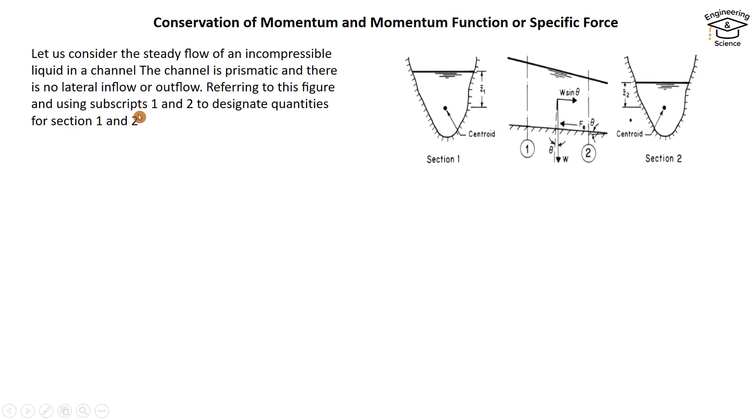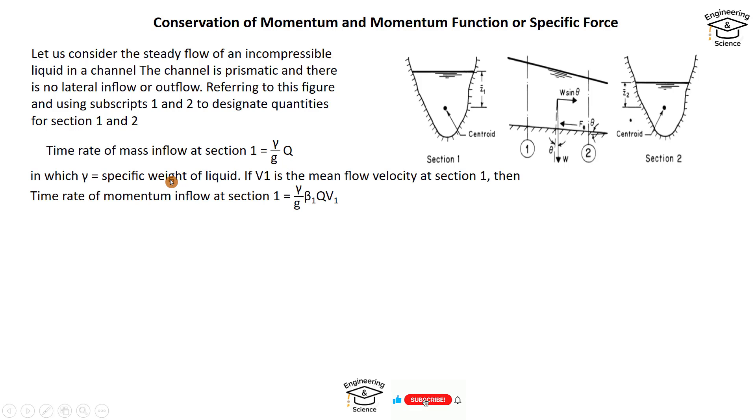We designate subscripts 1 and 2 for sections 1 and 2. Time rate of mass inflow at section 1 equals γ/g × Q, where γ is specific weight of liquid and V₁ is mean flow velocity at section 1.